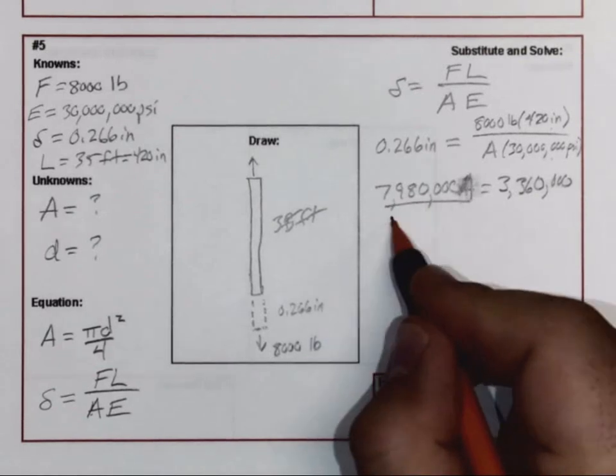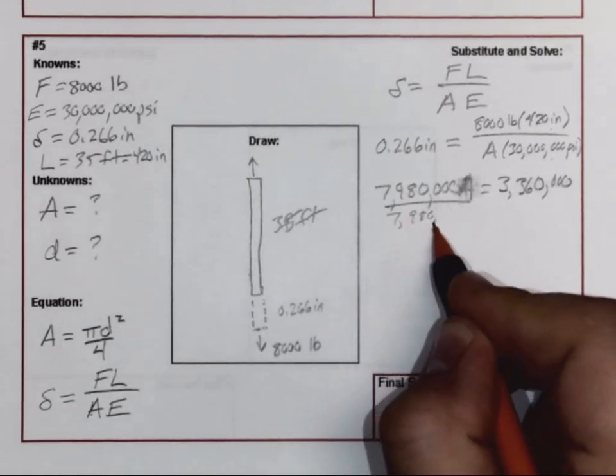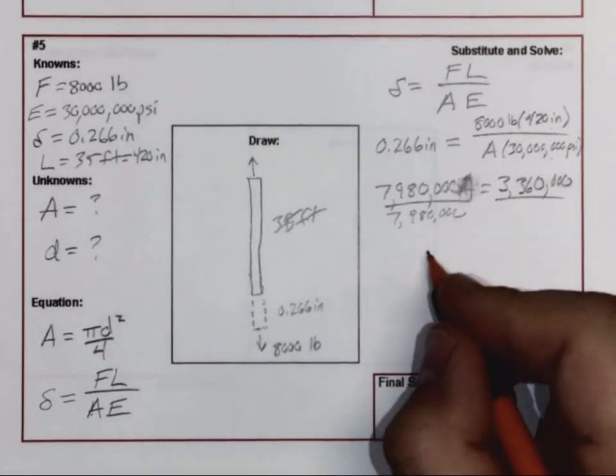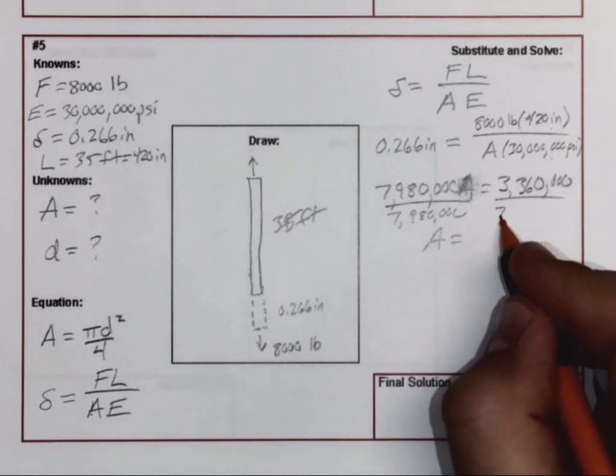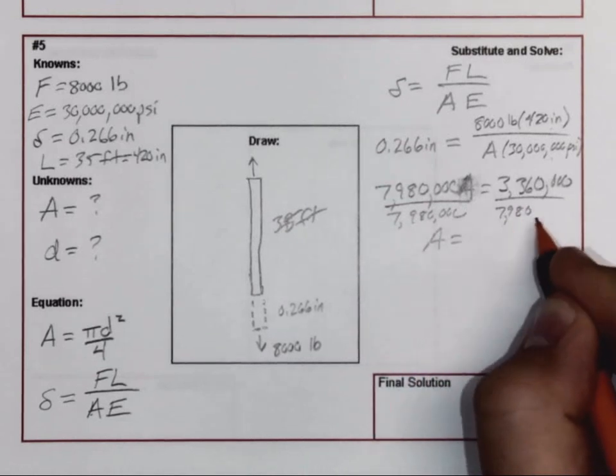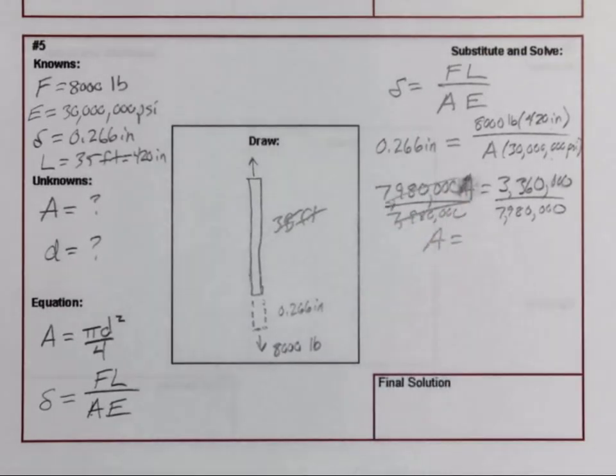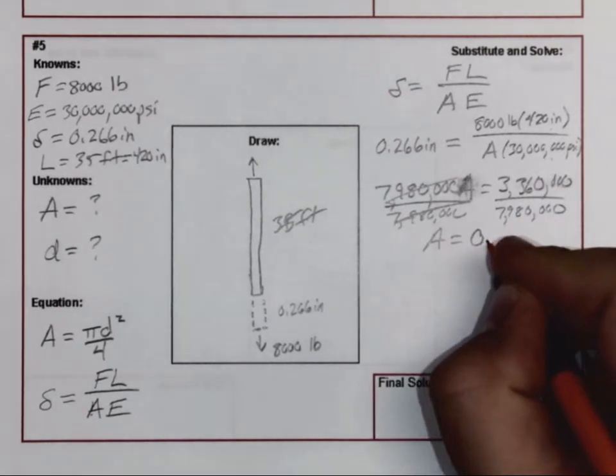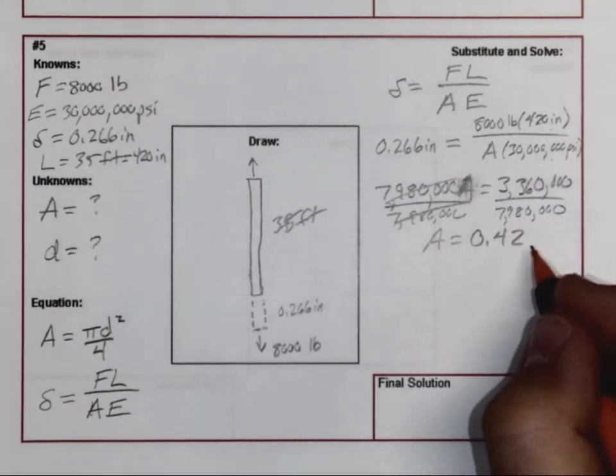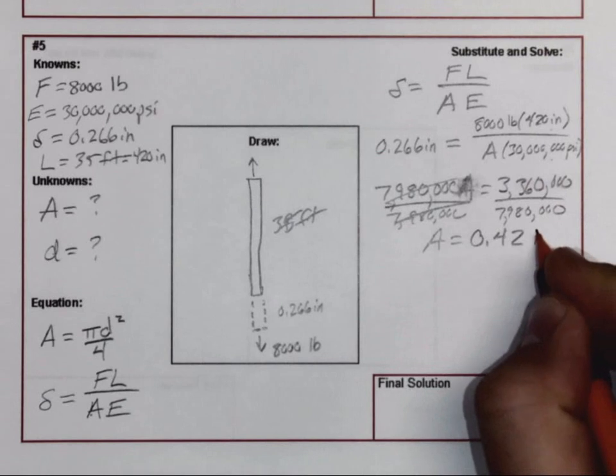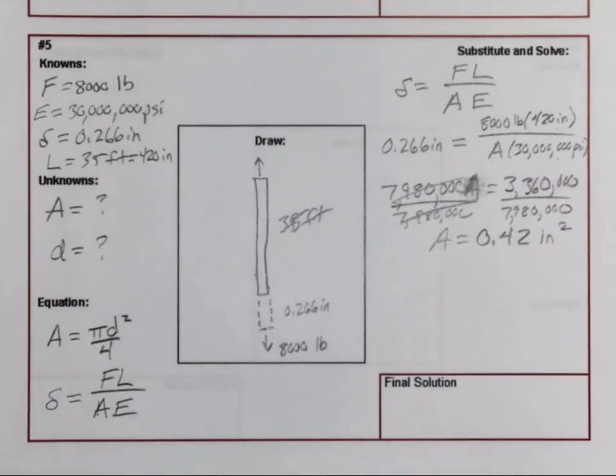A is equal to... and then I can go ahead and take 8,000 pounds times 420 to simplify this, and here I'm going to end up getting 3,360,000. Here I'm going to have to divide by my 7,000,000 to get A by itself.